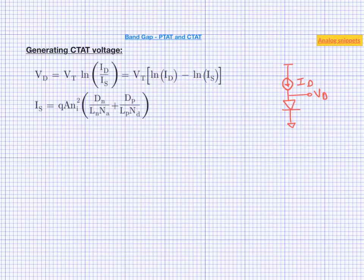Now Ni squared itself has a complicated equation. But if we concentrate only on the primary temperature effects, we can simplify things a lot. It is again an exponential relationship.